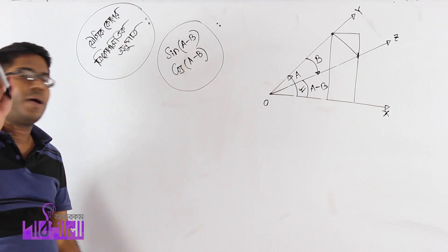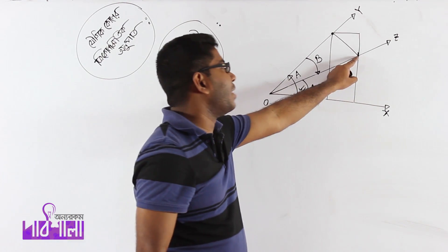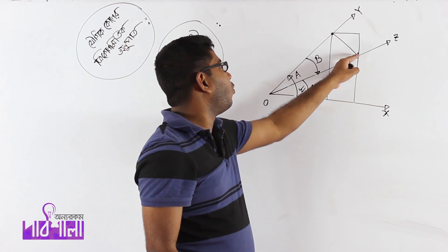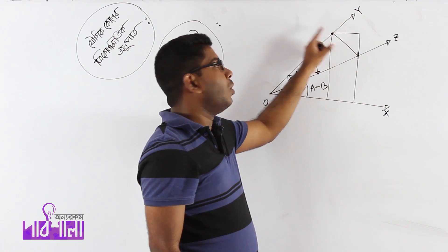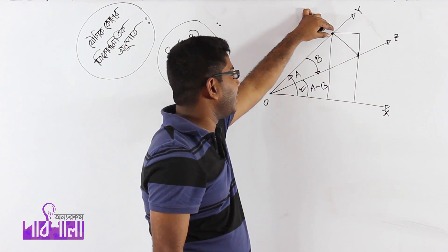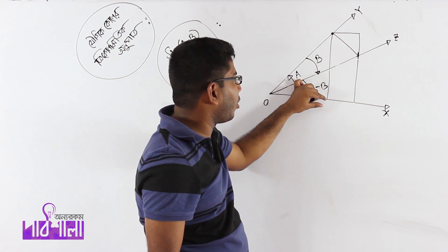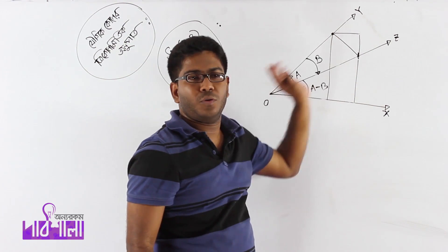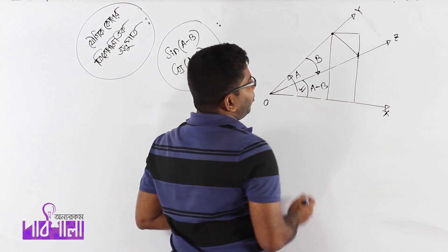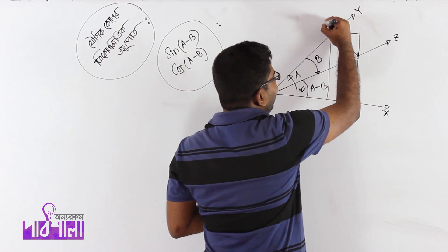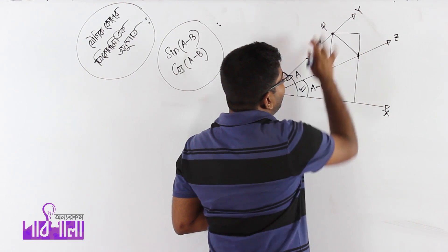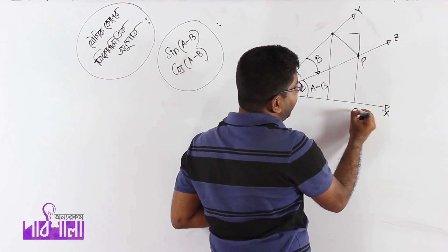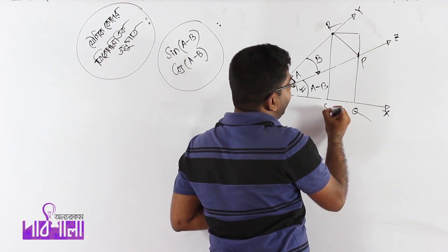Then from that arbitrary point z, we drop a perpendicular to the x-axis and a perpendicular to the y-axis. From the point we obtained, we drop a perpendicular to the x-axis, and we name these points: this point P, this point Q, this point R, this point S.